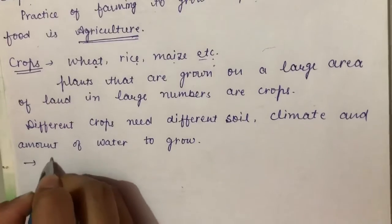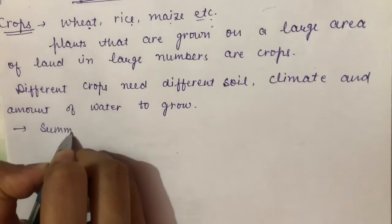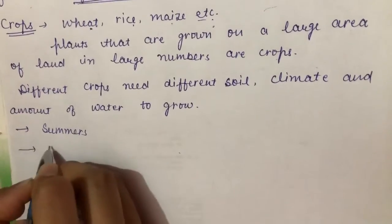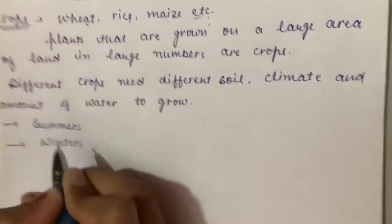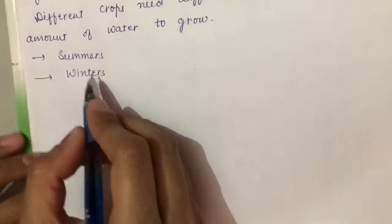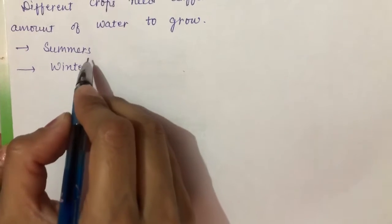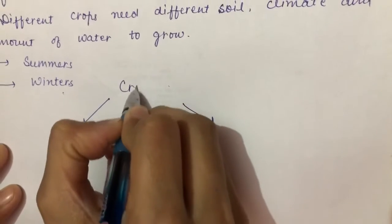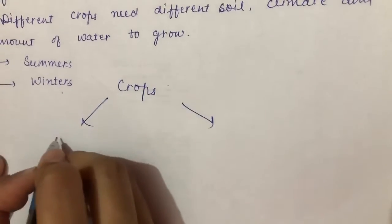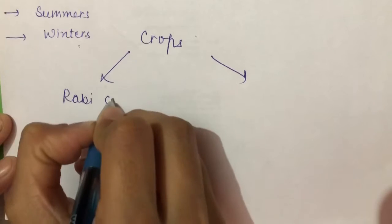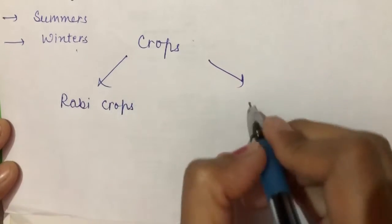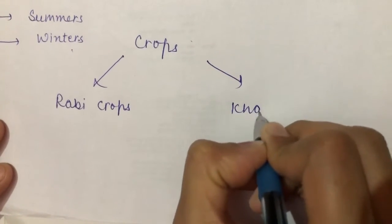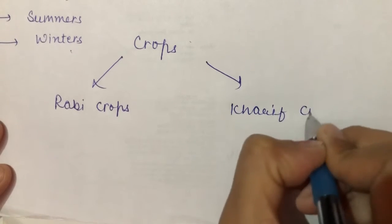Some plants are grown in summers and some plants are grown in winters. Depending on the season of their sowing, we can divide our crops into two categories: one is Rabi crops and another one is Kharif crops.